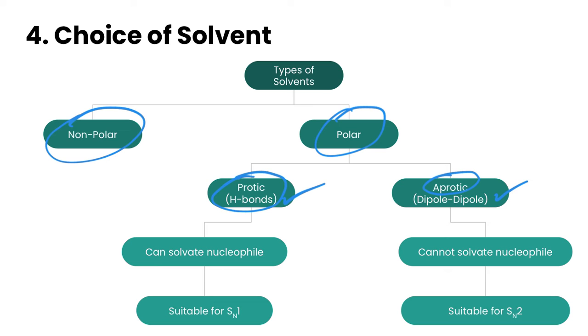In terms of how they solvate the nucleophile, protic solvents can solvate the nucleophile. When we're talking about the nucleophile, we're usually looking at the OH- nucleophile in the reactions that we're looking at. This can hydrogen bond with, for example, maybe the protic solvent is water. Aprotic can't solvate the nucleophile.